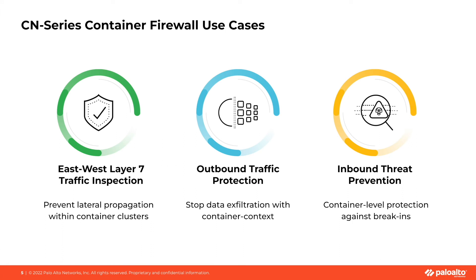There are three main use cases for the CN Series Containerized Next Generation Firewall. The first is east-west layer 7 traffic inspection, which prevents lateral propagation within container clusters. The second is outbound traffic protection, which stops data exfiltration with container context.